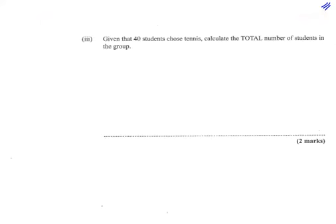Next we're asked, given that 40 students chose tennis, calculate the total number of students in the group. So here 40 students chose tennis, and that 40 students is represented by 45 degrees. So the sector angle for tennis is represented by 45 degrees.